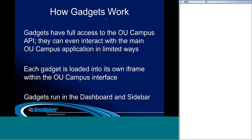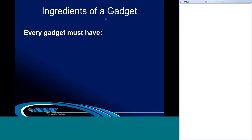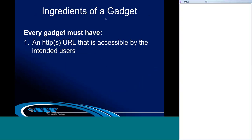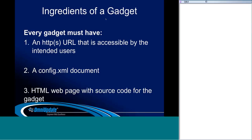APIs are a big part of gadgets — they're not the only way gadgets work, but gadgets have full access to the OU Campus API calls and can even interact with the main OU Campus application in limited ways. When building a gadget, it's built out as a web app and loads inside OU Campus within its own unique iframe, either in the side panel, the sidebar, the dashboard, or both. Every gadget must have an HTTP or HTTPS URL accessible by intended users, a config.xml document that communicates instructions to OU Campus, and the actual HTML web page with your source code and styling.